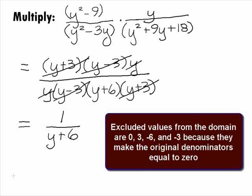Also note that the values that would be excluded from the domain of the original rational expressions are 0, 3, negative 6, and negative 3. Those are the values that make the original denominators equal to 0.